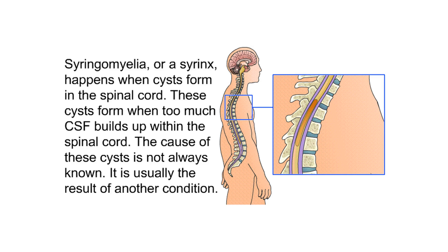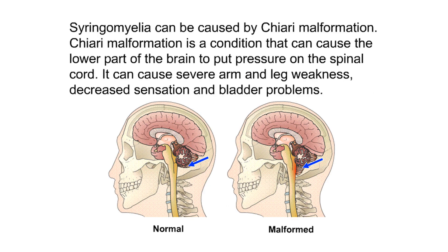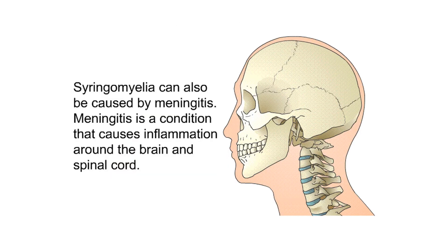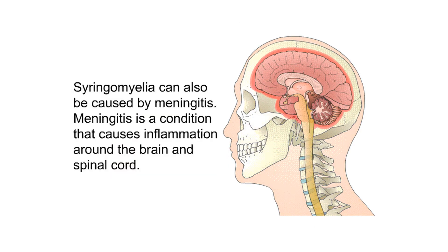Syringomyelia can be caused by Chiari malformation, a condition where the lower part of the brain puts pressure on the spinal cord, causing severe arm and leg weakness, decreased sensation, and bladder problems. It can also be caused by meningitis, a condition that causes inflammation around the brain and spinal cord.